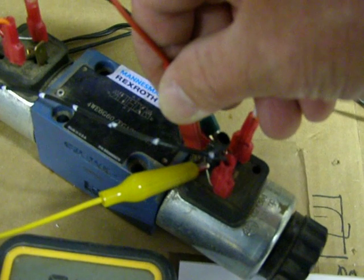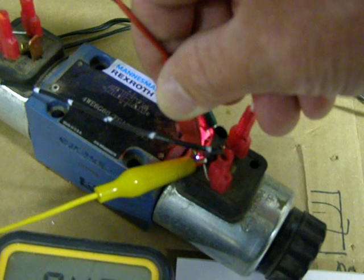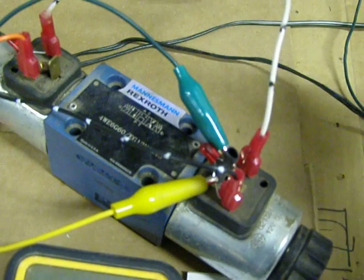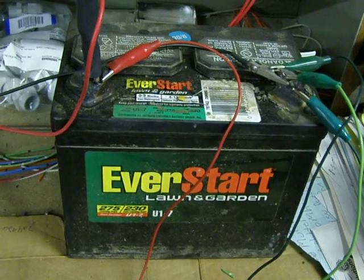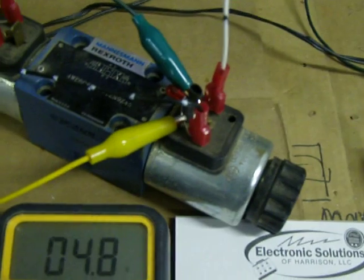turn off the solenoid to check your function. All you need is a simple car battery, and I have gator clips hooked up to this really crude, just to show you how to test it.